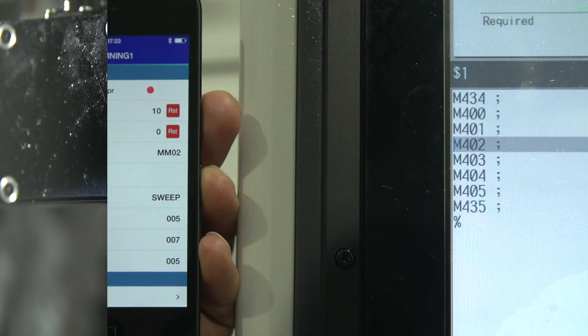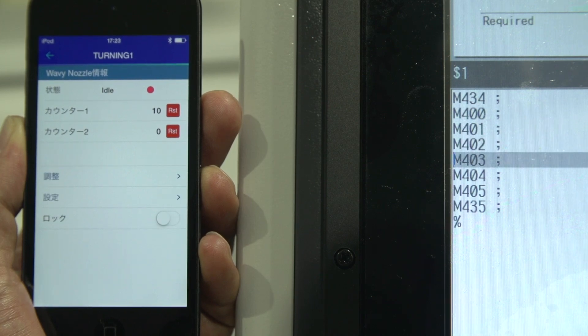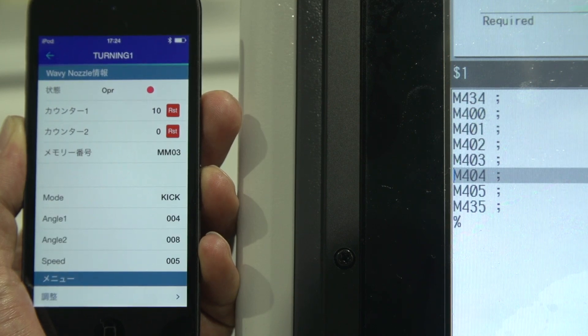Also, if a user simply downloads the specialized application to their smartphone or tablet, Wavy Nozzle 2 can use the smartphone as a wireless controller.